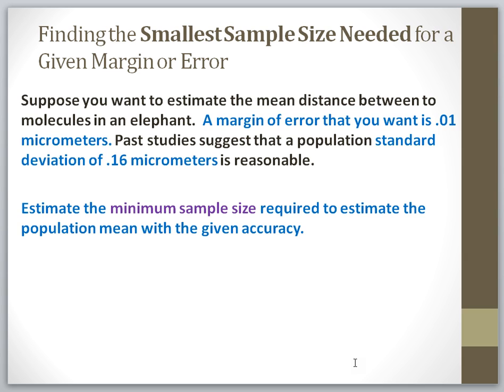The smaller the error that you want, the bigger your sample is going to have to be. If we want a tiny little margin of error — if we want to be super close to the actual population parameter — our sample size better be pretty huge so that we're really getting a good estimate of the population. But if my margin of error can be big and it doesn't really matter, then I can have a smaller sample size. The reason why we bother to calculate the sample size is that for most companies, doing research and taking samples is extremely expensive and time-consuming, and so we need to know that margin of error to calculate the minimum sample size.